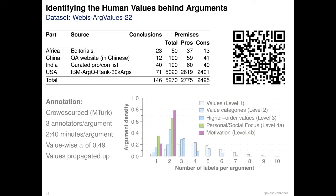We then used this taxonomy to create a dataset of 5,270 arguments using four sources, which we named by the target audience region. Nearly all arguments were taken from the US-focused IBM RQ Rank 30K args dataset, in which the premises for given claims were obtained by crowdsourcing. However, to test the universal claim of the value taxonomies, we also tried to incorporate arguments targeted at audiences from other regions. This endeavor proved surprisingly difficult, as all major argument datasets focus on arguments for a Western audience.